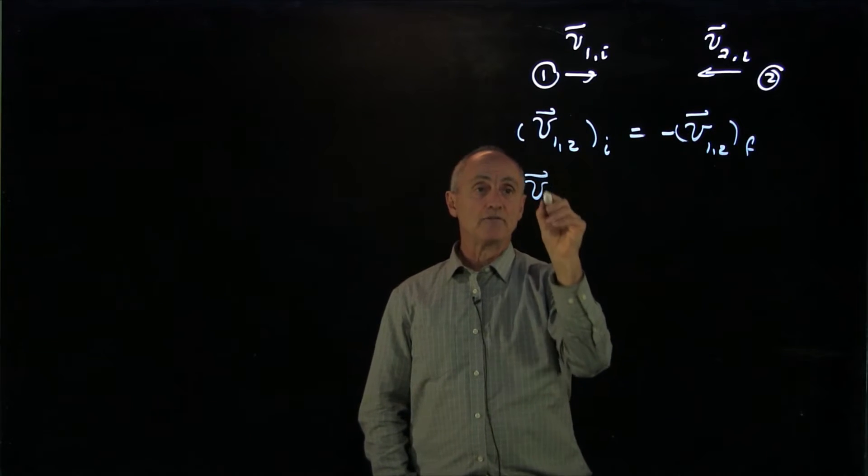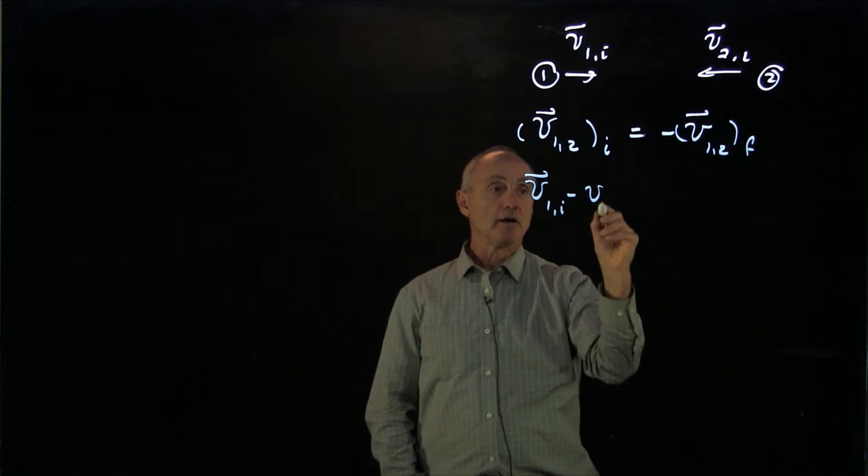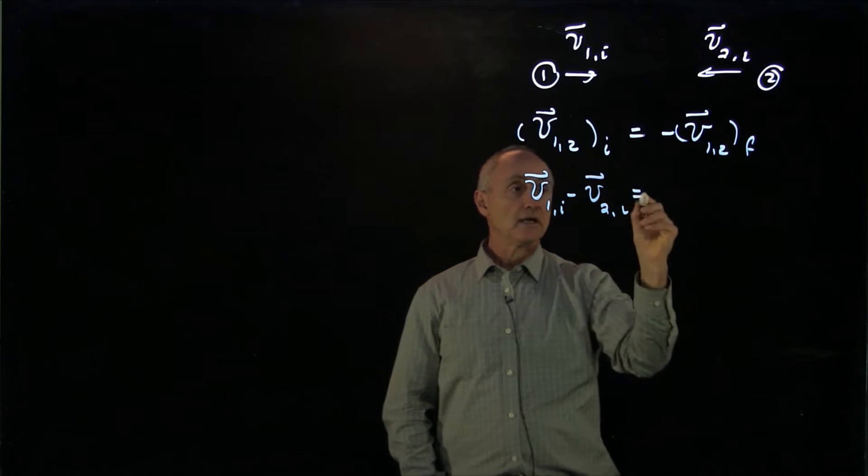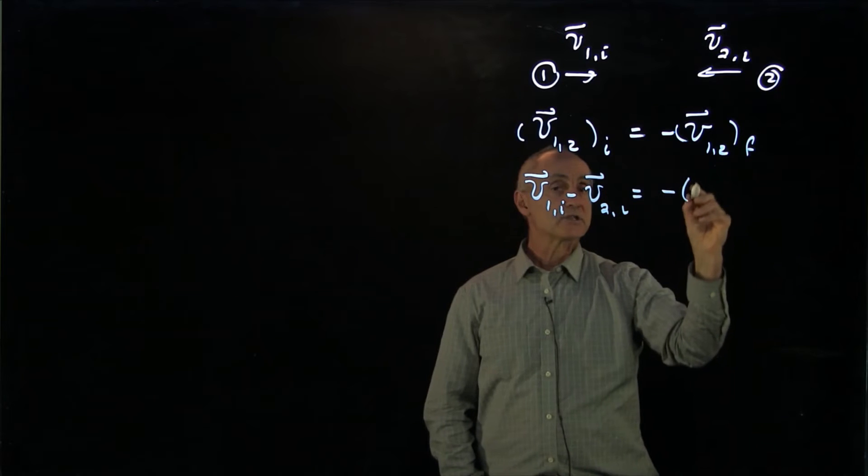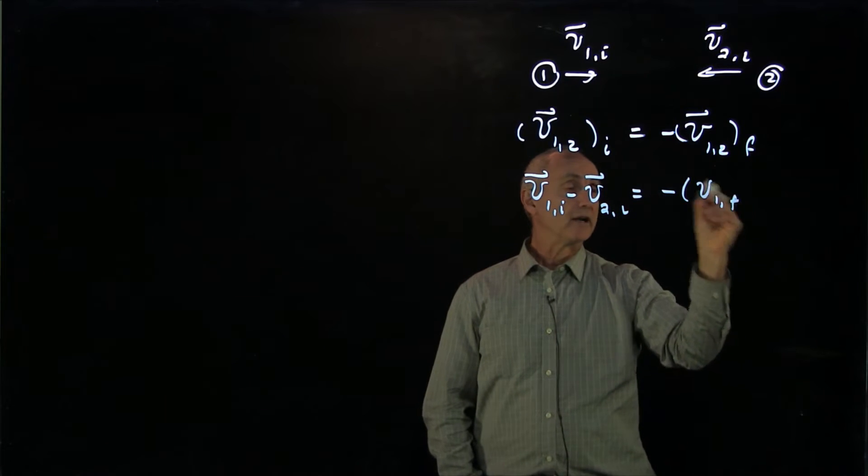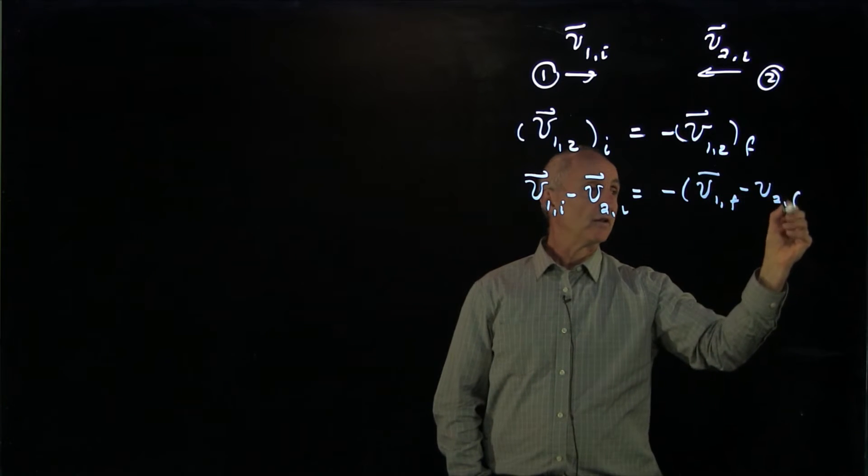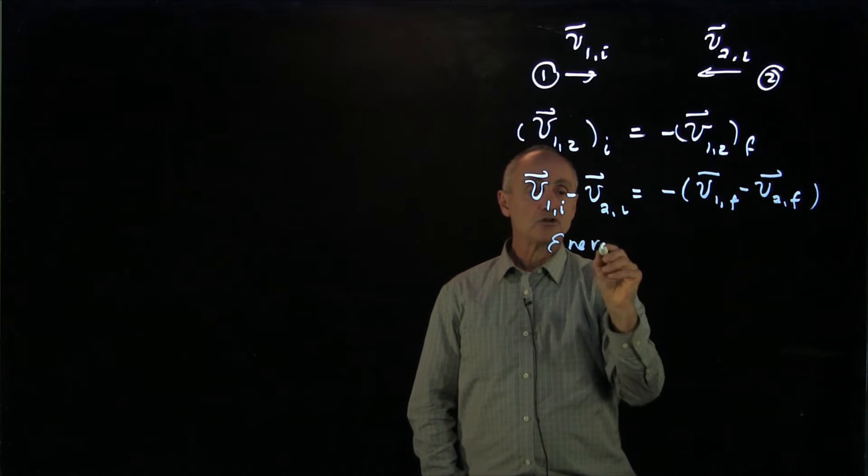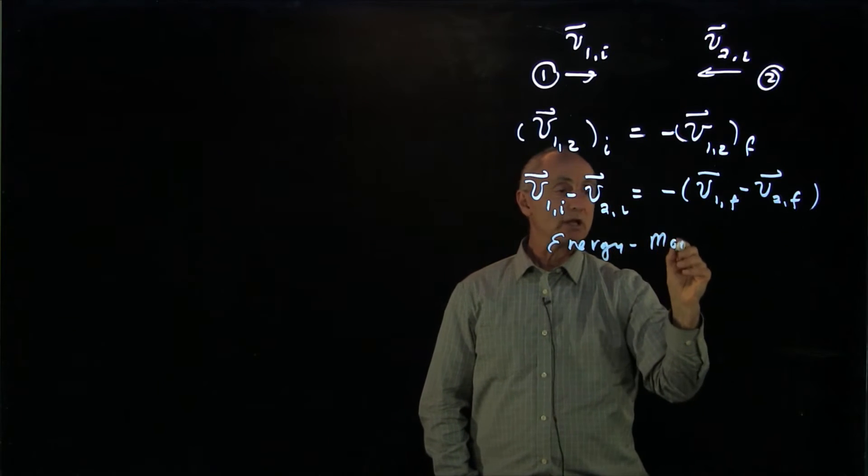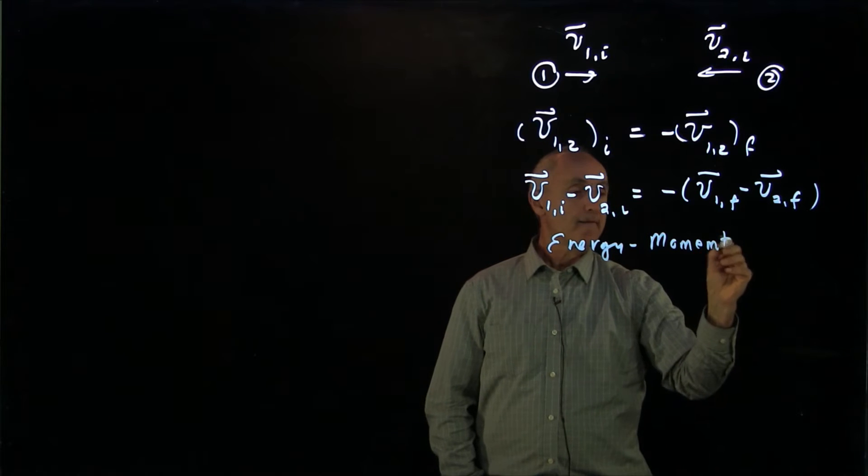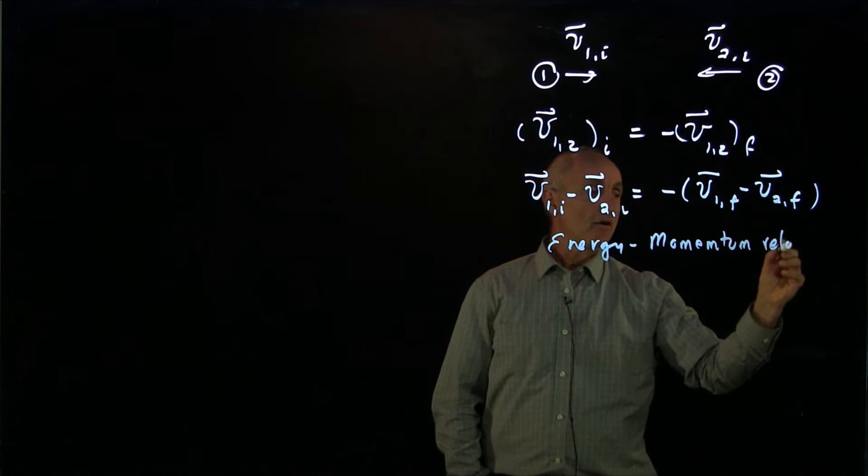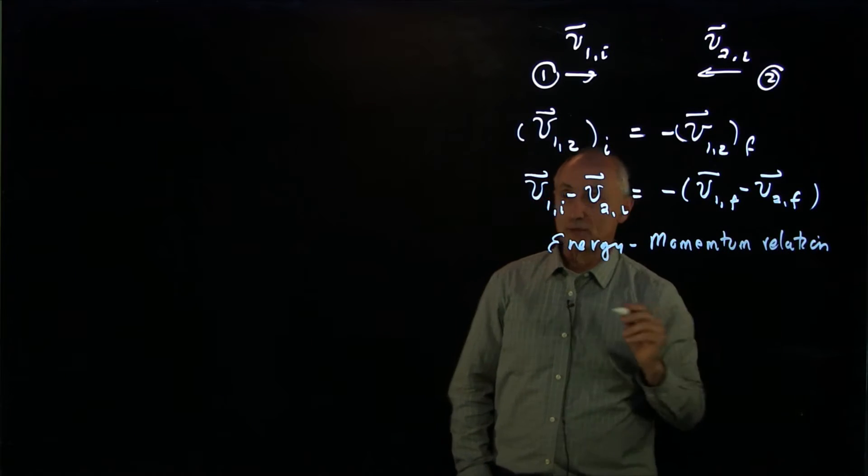The statement there was that v1 initial minus v2 initial is equal to minus v1 final minus v2 final. And we called this the energy momentum relation for our classical mechanics.